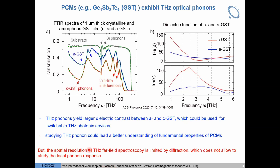Based on the far-field spectrum, we extracted the dielectric function. The imaginary part of the dielectric function shows us that the crystalline stage has a stronger optical phonon than the amorphous stage. Particularly in the phonon range, the difference of the permittivity between both stages shows a significant difference, which introduces a larger dielectric contrast between both stages. So the terahertz phonon in phase change material could be used for switchable terahertz photonics devices, and studying the terahertz phonon could give a better understanding of the fundamental properties of phase change materials.